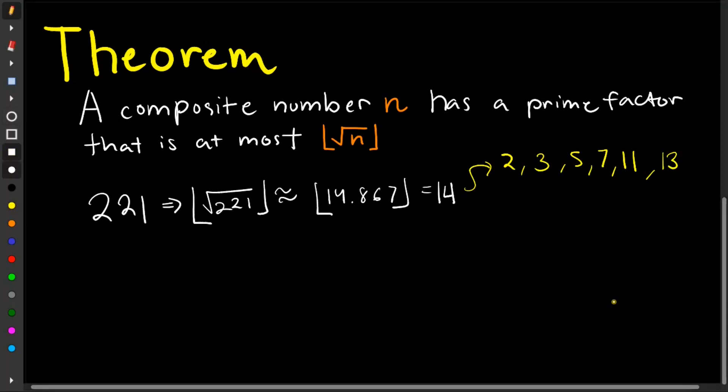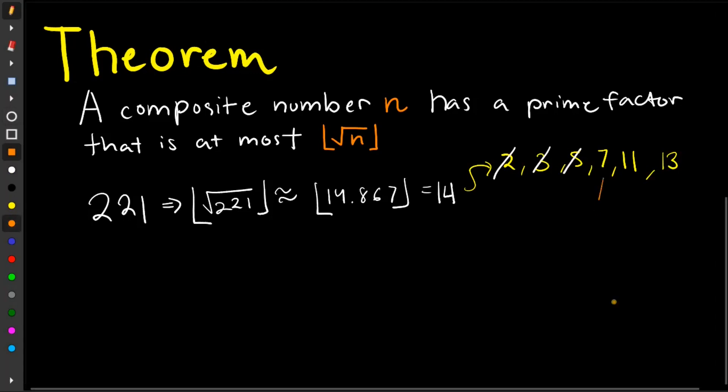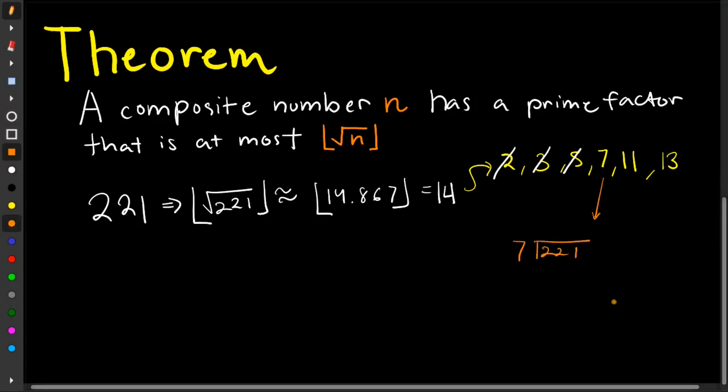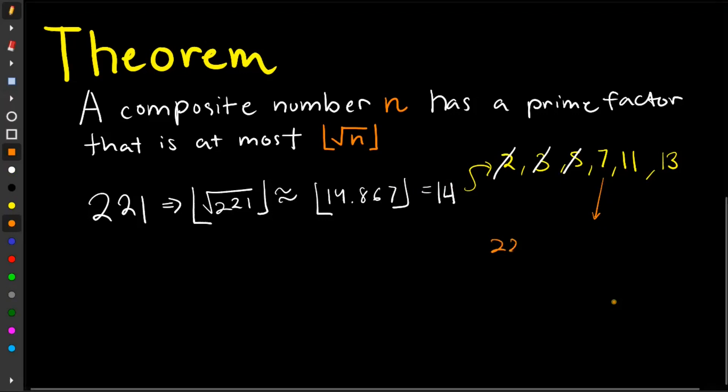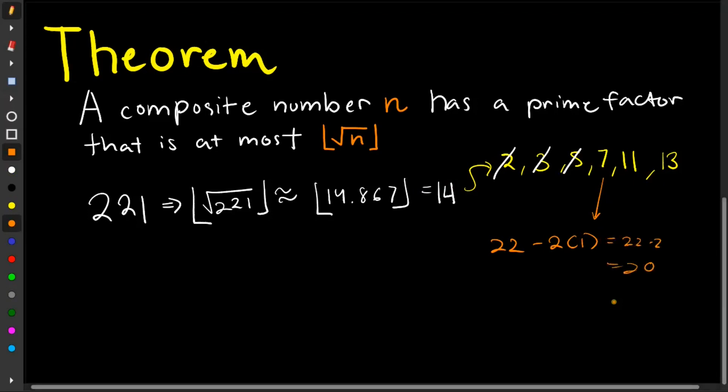So first, obviously, it is not divisible by 2, since it is not even. 3 as well, since 2 plus 2 plus 1 is 5, so it is not divisible by 3. Since it ends in 1, it is not divisible by 5. So for 7, let's try to apply the divisibility rule. So we have 22 minus twice the last digit. This one should give us 22 minus 2, which is equal to 20, which is clearly not divisible by 7. So it's also not divisible by 7.